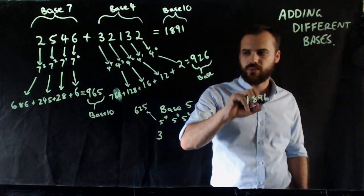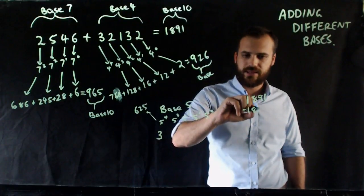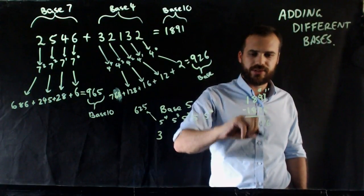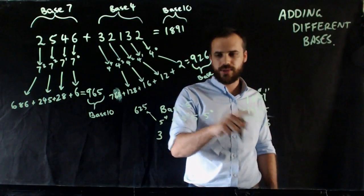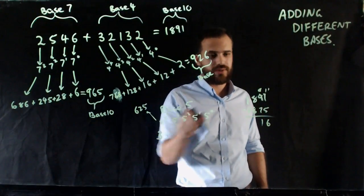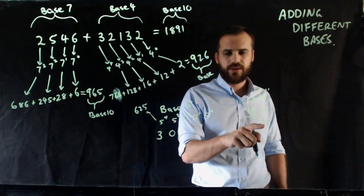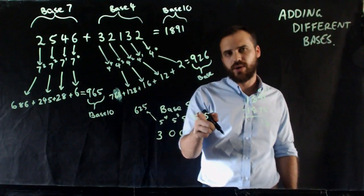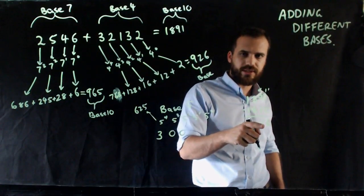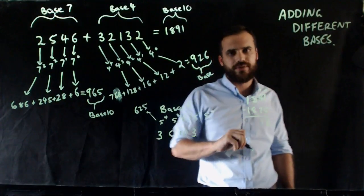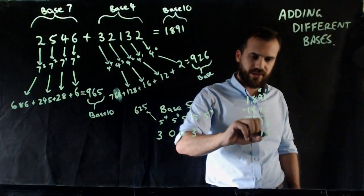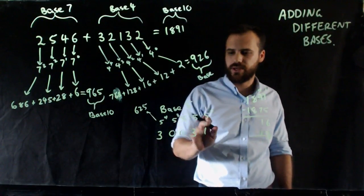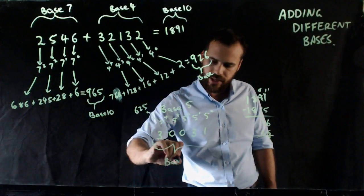1,891 minus 625 times 3 is 16 left over. You can use a calculator, obviously. Then we go to our next column: 5 to the power of 3 is 125 — that won't go in at all, so there's 0 in there. 5 squared is 25 — no, there's not going to be any of them. 5 to the power of 1 — that's our 5s column. How many 5s in 16? 5, 10, 15 — I have 3 fives, so that's 15. And then there's 1 left over that goes in our 1s column. So the answer is 30031 in base 5.